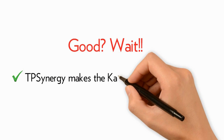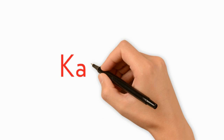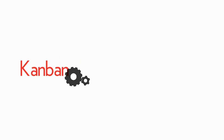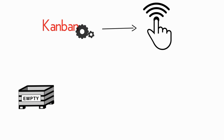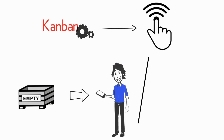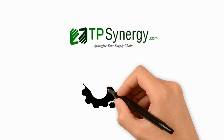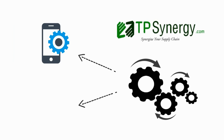TP Synergy makes the Kanban process even better. In a traditional Kanban system, manual signals are used — when the bin becomes empty, the supplier needs to be informed by phone or email. TP Synergy automates this process using mobile apps and cloud technology.